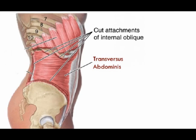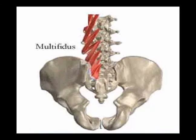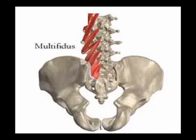The posterior core muscles envelope the vertebrae and can be divided into a deep and superficial layer. The deep layer is the multifidi and the superficial layer is the erector spinae.